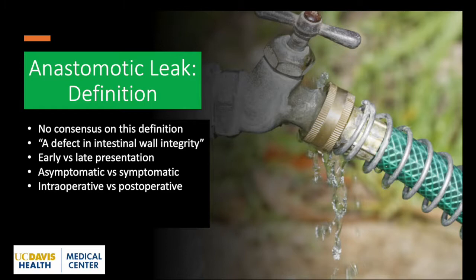No great consensus exists on the definition of an anastomotic leak, but it's commonly described as a defect in the intestinal wall integrity at the anastomotic site that leads to a communication between the intraluminal and extraluminal compartment. We can subcategorize a leak into early versus late presenting leaks, those that are symptomatic versus asymptomatic, as well as intraoperative and postoperative leaks.